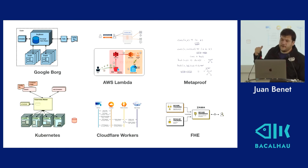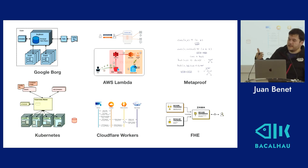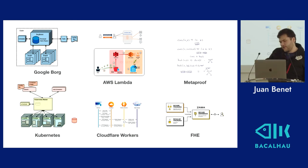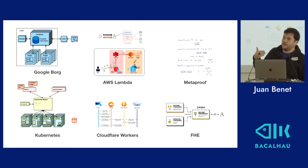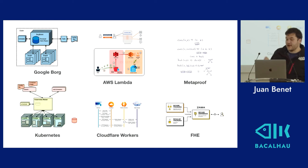There's a whole set of zero-knowledge proof oriented or verifiable computation oriented systems — things like Metaproof and Lurk — and other languages that enable you to write proofs about computation. Lean into that whenever the computation is not too expensive. Also, fully homomorphic encryption is coming as a whole other possibility.